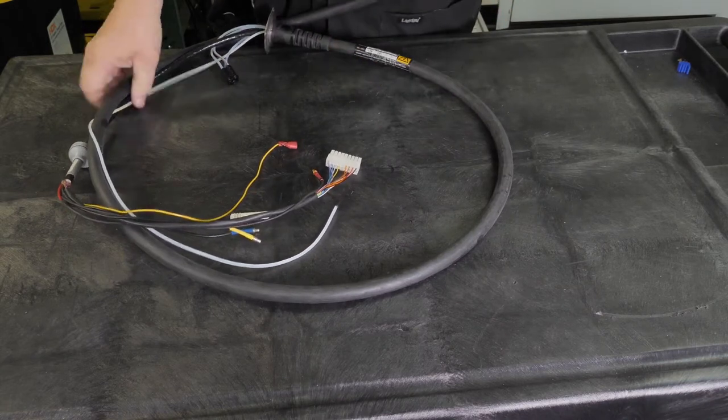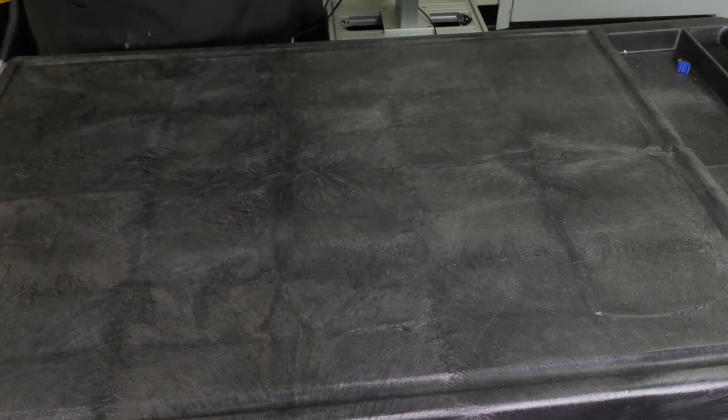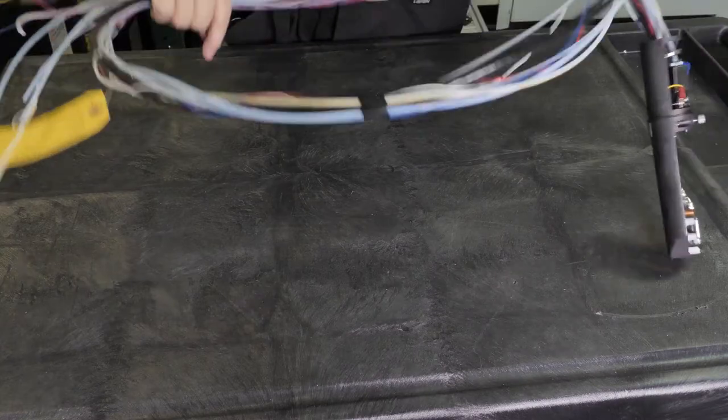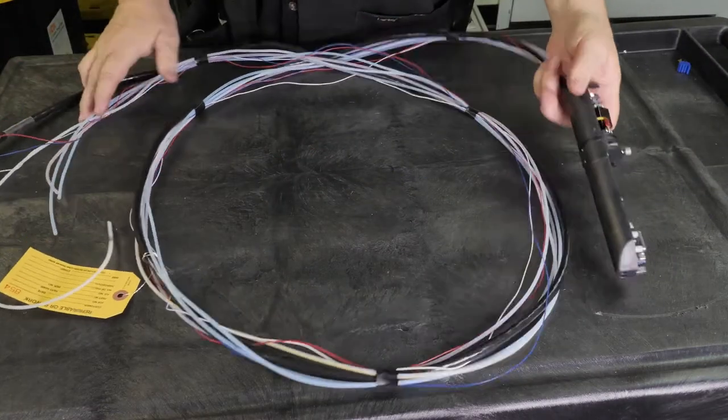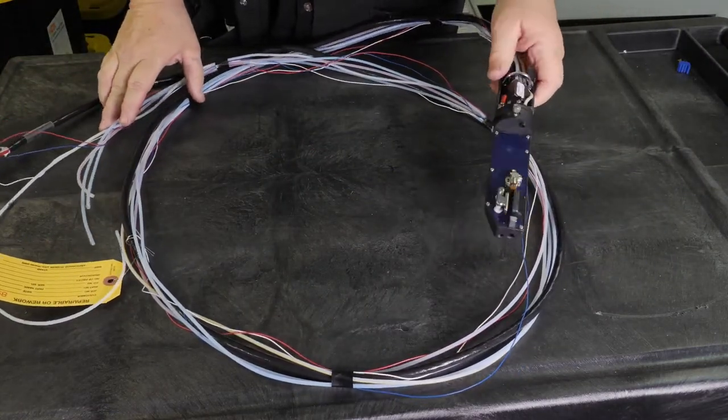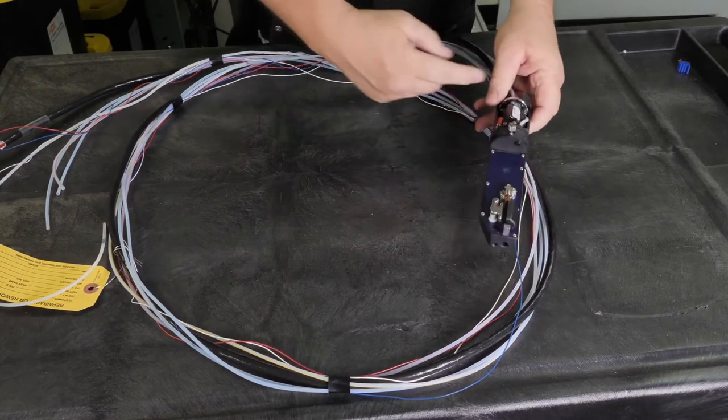The technician will strip off the conduit material, also known as the umbilical of the print head. The wires that are damaged are located and repaired and the conduit is replaced with new conduit material.